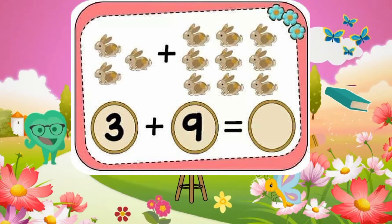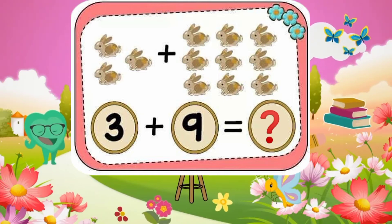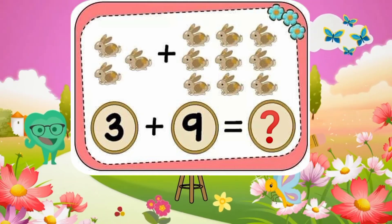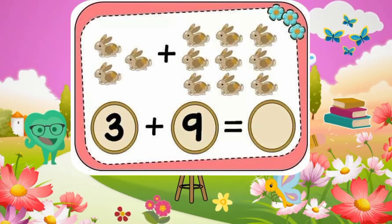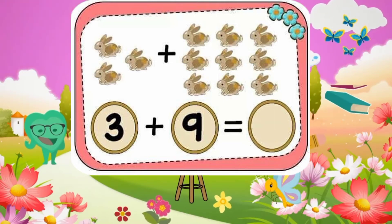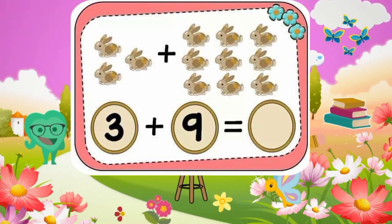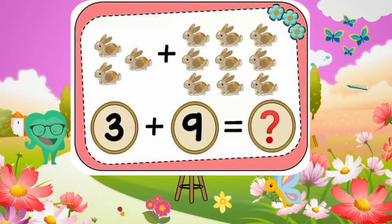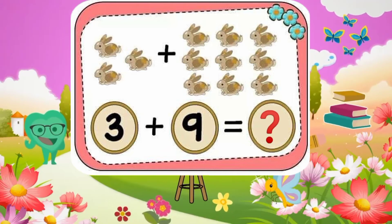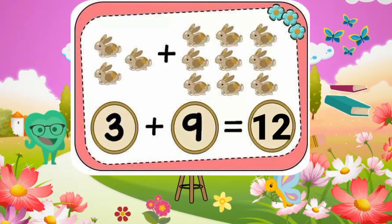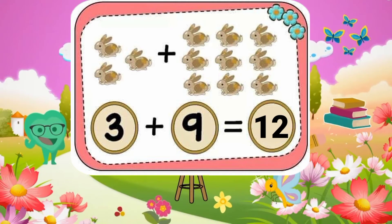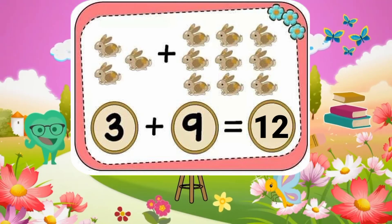3 plus 9 equals what? 3 plus 9 equals 12. Great job.